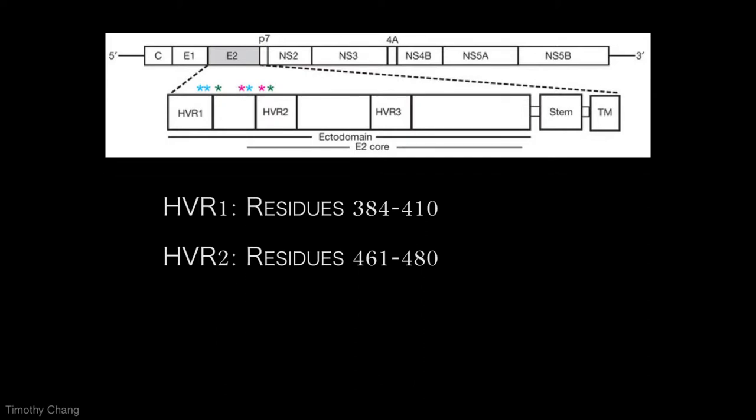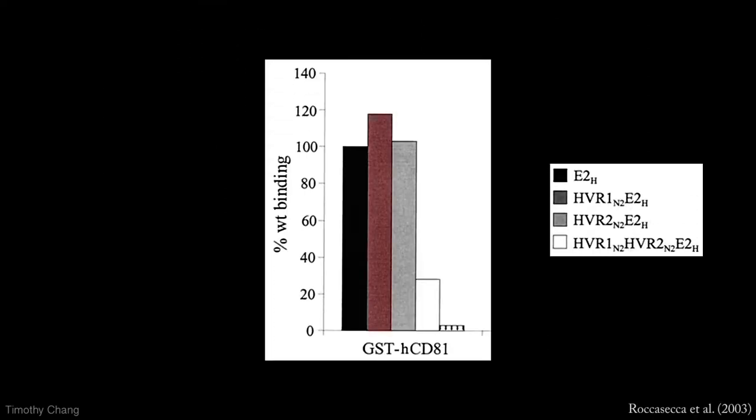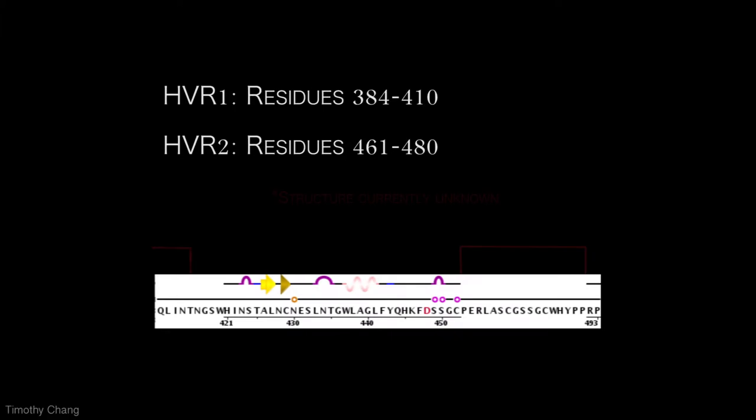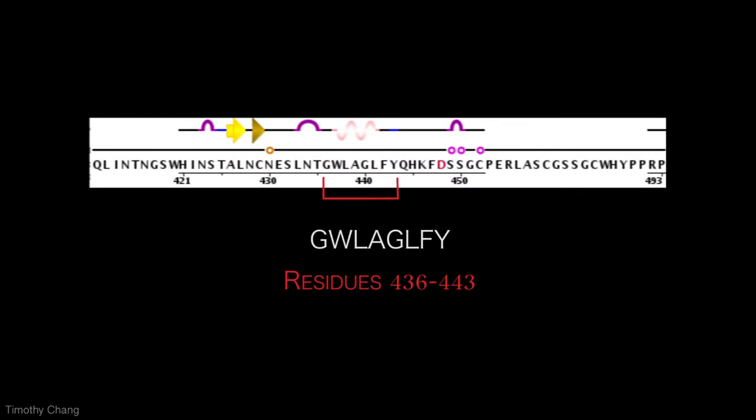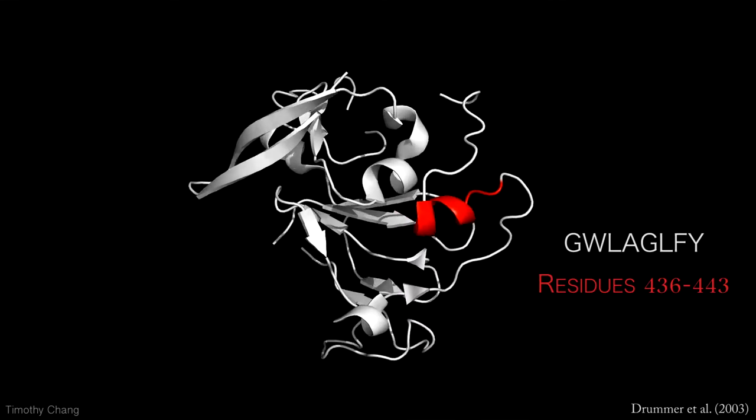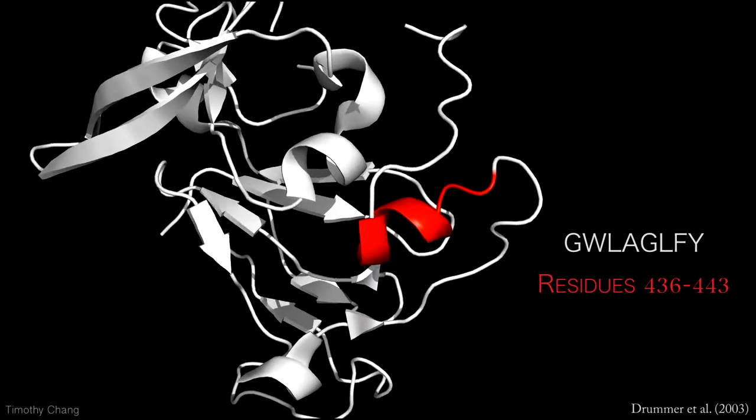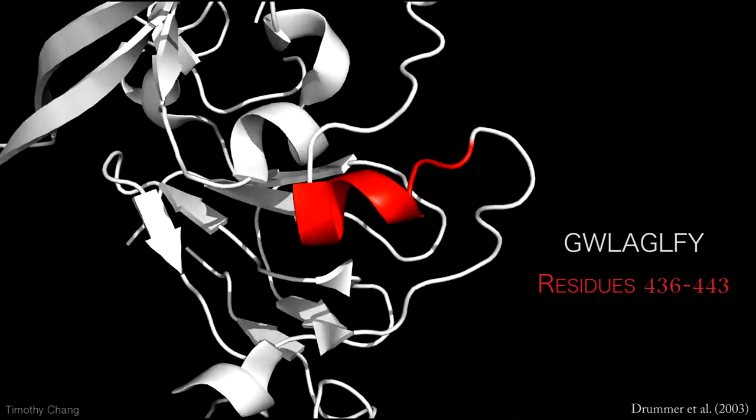The deletion of HVR1 was found to increase binding efficiency, while the removal of HVR1 and HVR2 was found to reduce binding efficiency. This suggests that both regions change accessibility of the CD81 binding site. Between the two regions is a conserved region of residues. With the characteristics of the surrounding regions, it was hypothesized that this motif could be a key binding domain of E2 and CD81.